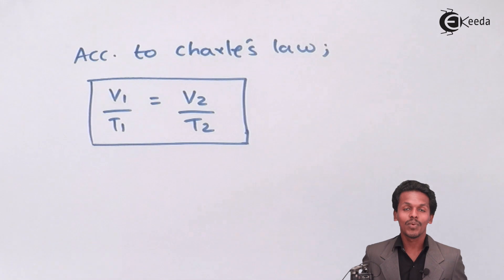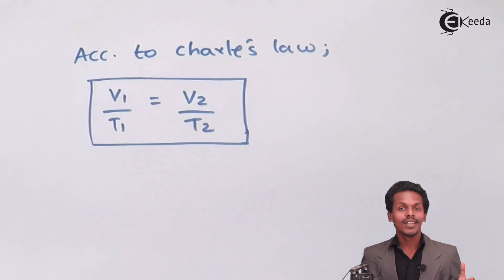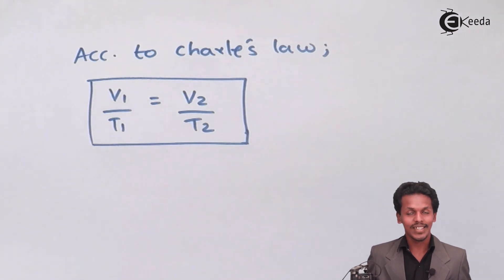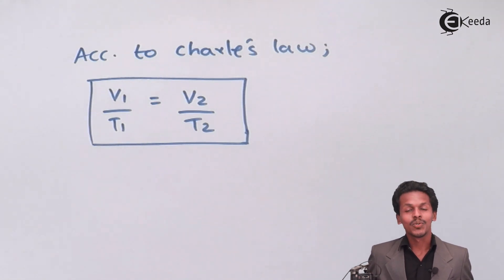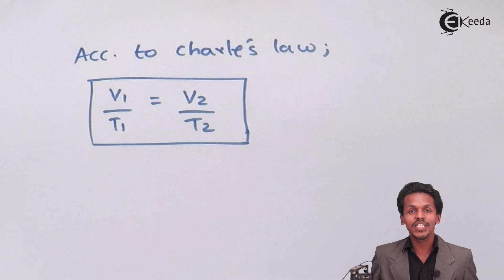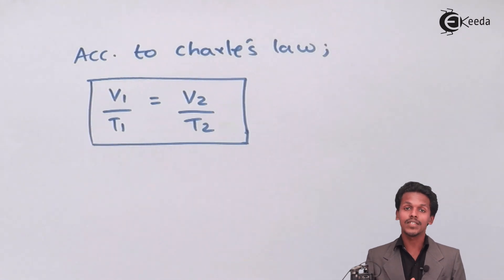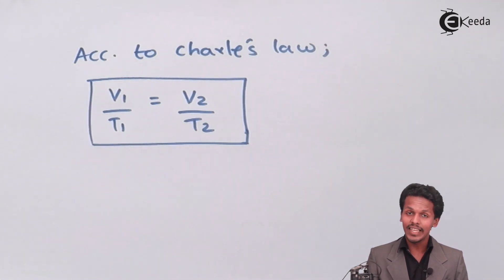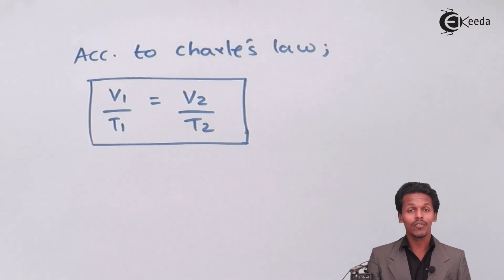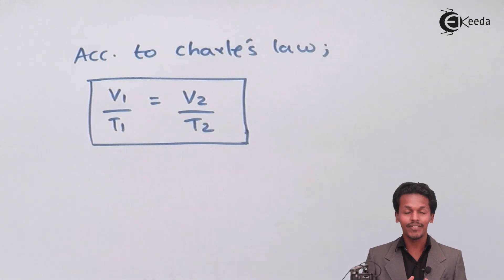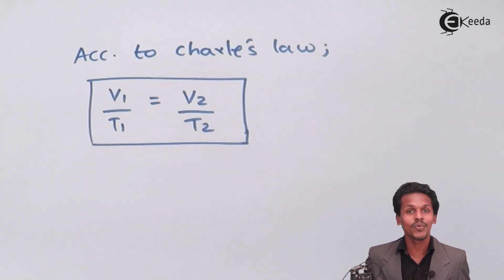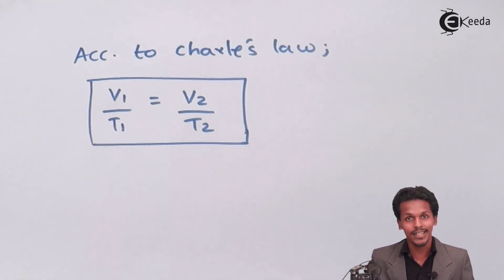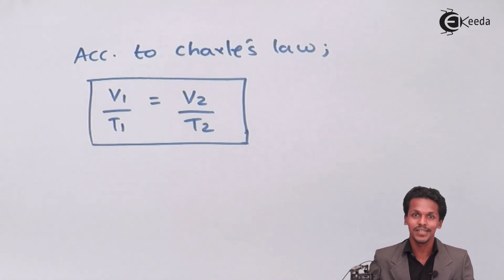So the formula V1/T1 = V2/T2 is what Charles's Law indicates. Thank you friends for watching this video. I hope you have liked it and understood the concept clearly, along with the definition and the derivation. Please share this video with your friends and don't forget to subscribe. Thank you so much.